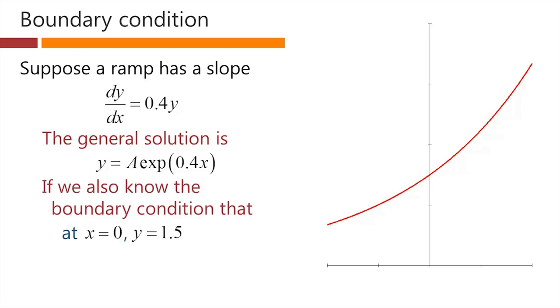Let's presume that for some reason, we know that at x equals 0, y is equal to 1.5. We know the height of the ramp at the position x equals 0. Well, the exponential of 0 is 1. In other words, at x equals 0, the exponential of 0.4 times x is 1. But also, when x equals 0, we know that y equals 1.5. That tells us that capital A has to be 1.5.